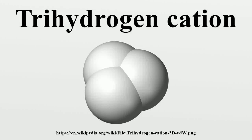The trihydrogen cation, also known as protonated molecular hydrogen or H3+, is one of the most abundant ions in the universe. It is stable in the interstellar medium due to the low temperature and low density of interstellar space. The role that H3+ plays in the gas-phase chemistry of the ISM is unparalleled by any other molecular ion. The cation is also the simplest triatomic molecule, since its two electrons are the only valence electrons in the system, and it is the simplest example of a three-center-two-electron bond system.